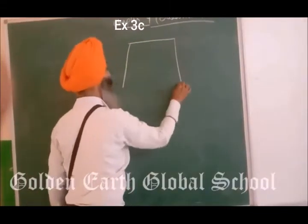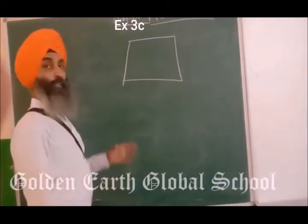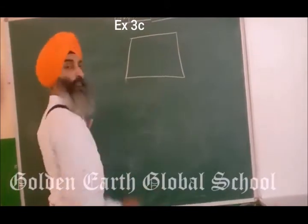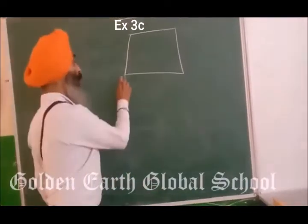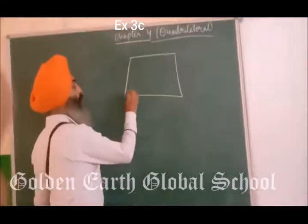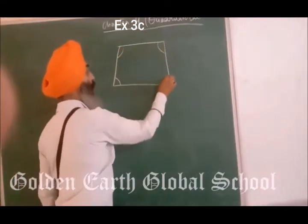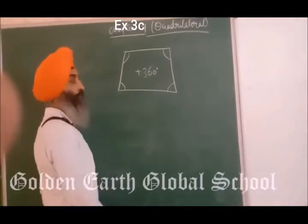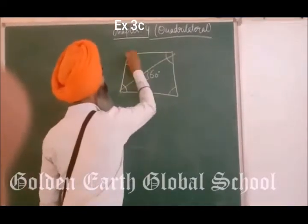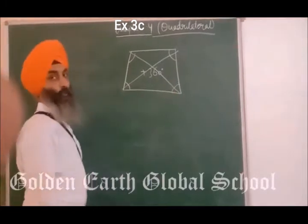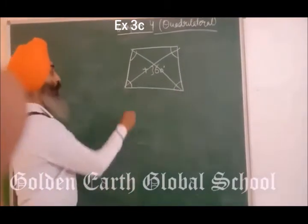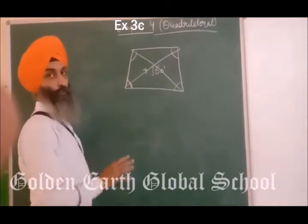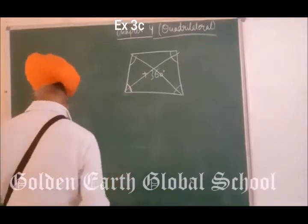You must know what do you mean by quadrilateral. A quadrilateral is a figure having 4 sides — it is a closed figure whose sum of all interior angles is 360 degrees. It has 2 diagonals. By applying the formula, it also has 2 diagonals and the sum of all interior angles is equal to 360 degrees. So this is all about quadrilaterals.